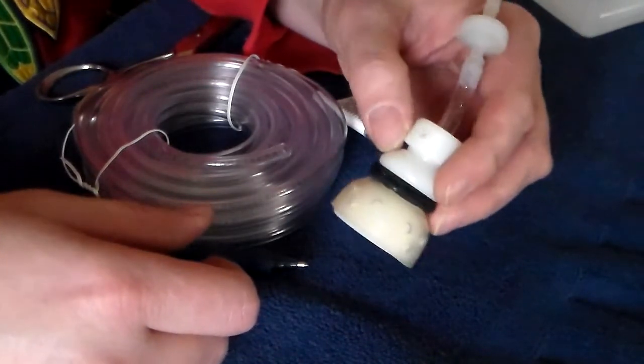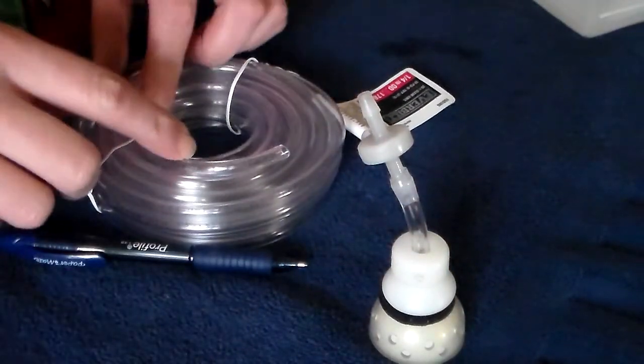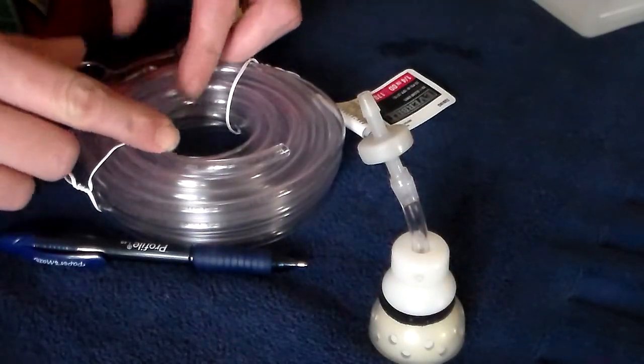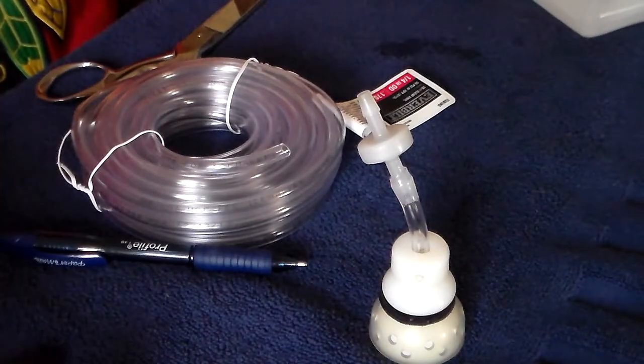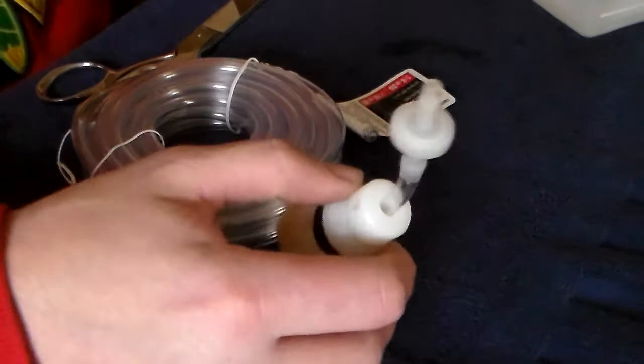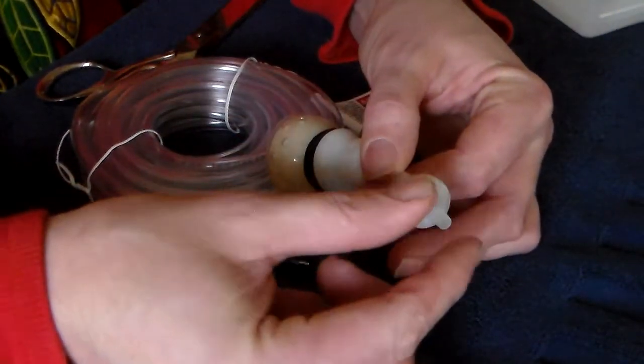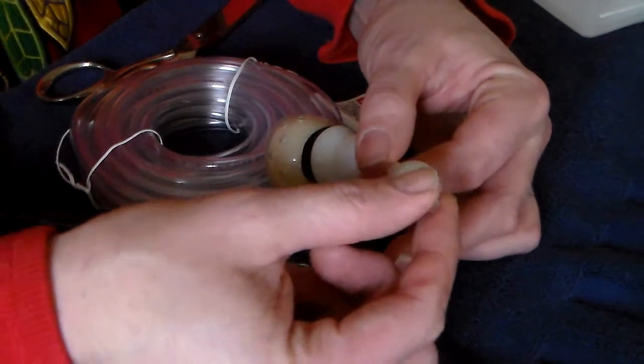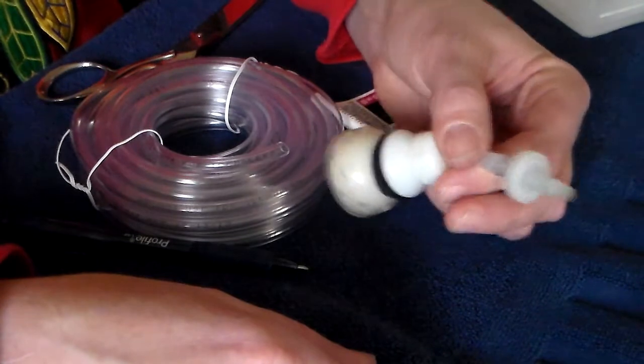And what I do from there is I'll take another piece of tubing and I'll cut it approximately 12 to 18 inches long so that I can install this temporarily. Install the second piece of tubing just lightly over the top.